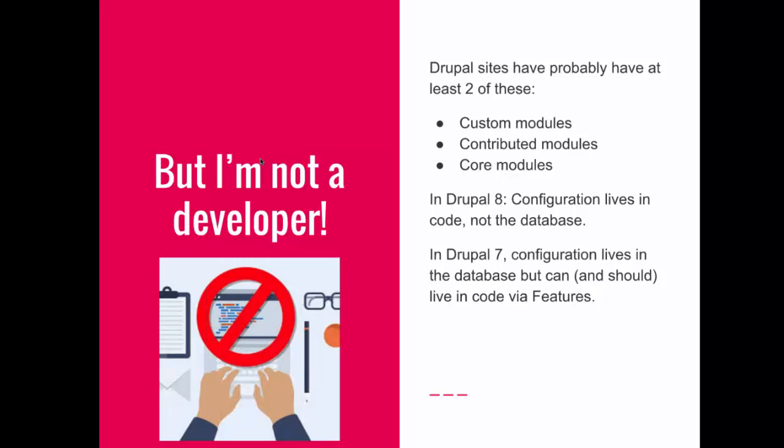Another reason why it should matter is that starting with Drupal 8, which all of us will eventually have to upgrade to, all of your configuration lives in code and not in the database. That means if you go into your Drupal site right now and create a content type, add a field, create a new user role, or add a new permission — starting with Drupal 8, all of that information lives in code. That means you can undo anything you do through the website user interface if something goes wrong. In Drupal 7, it still lives in the database, but you can export your configuration to live in code via the features module or the features builder module.